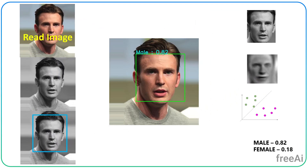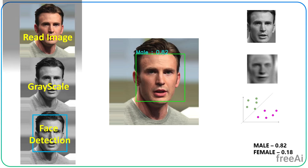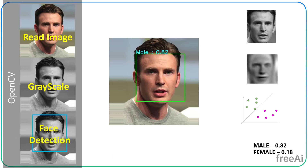The steps are: read the image into an array, convert it into grayscale, and detect the bounding box of the face using a Haar cascade classifier. These steps will be done using the OpenCV library. Then, in order to achieve the class name and the confidence score, we use a machine learning model.